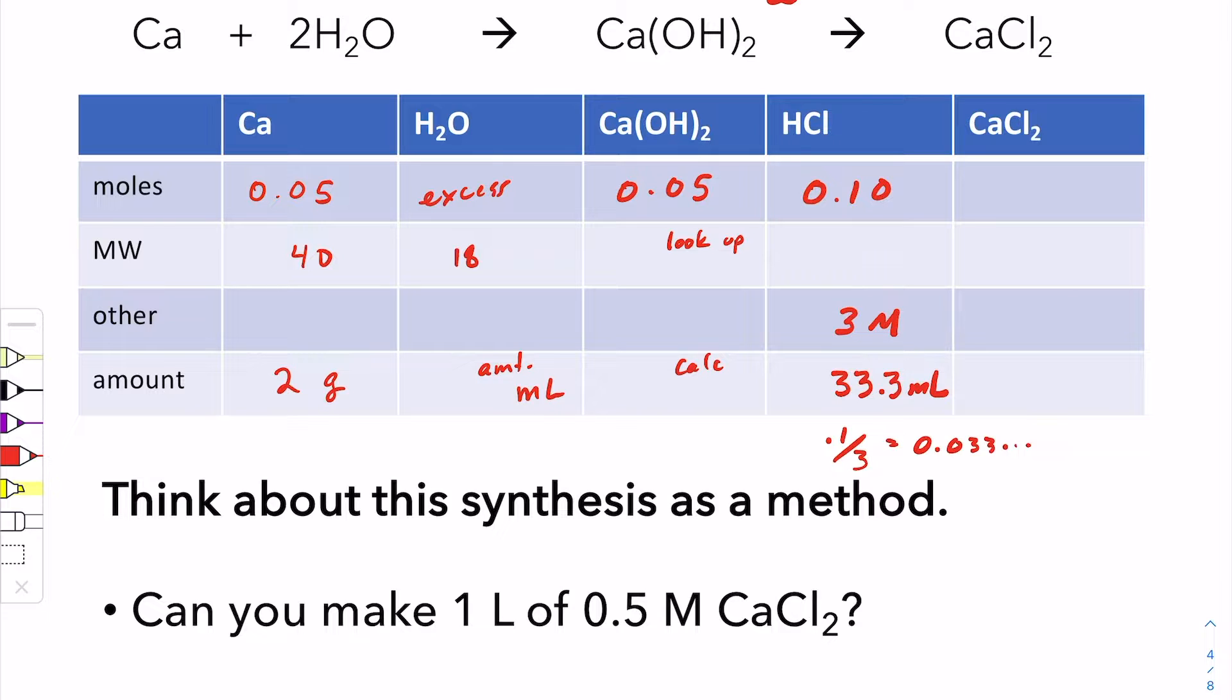The amount of calcium chloride that you could potentially make, according to the balanced reaction, is 0.05 moles. And again, you could add a molecular weight and calculate this theoretical yield. We're not isolating calcium chloride, so we'll never actually know the real yield of the reaction.